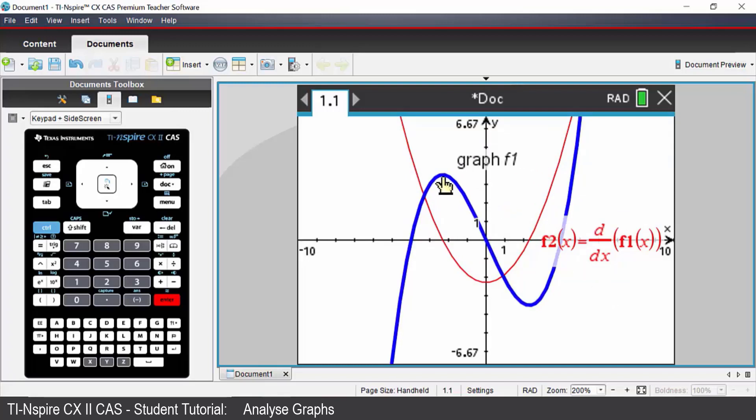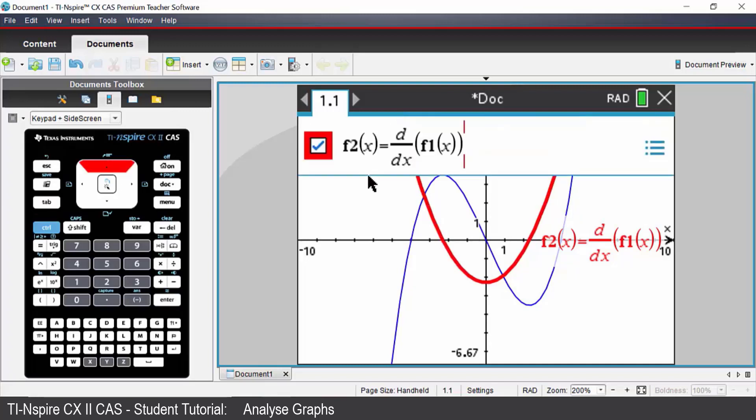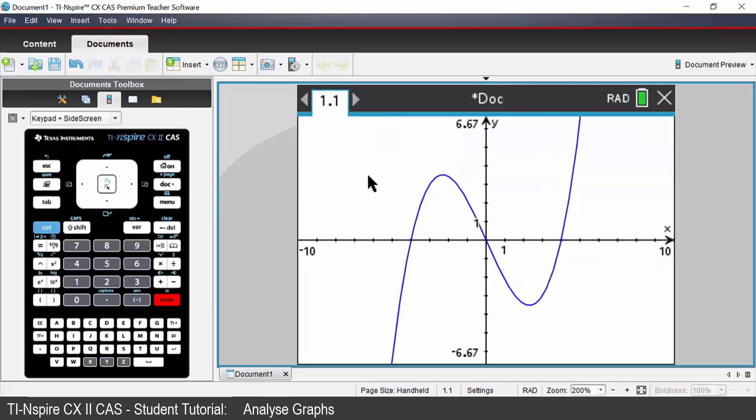Note that the local maximum there has a gradient of 0, and that should coincide with the x intercept of your gradient function. I will just remove that function, so I press tab. I can come up and I can just remove that function by backspacing. Press enter.